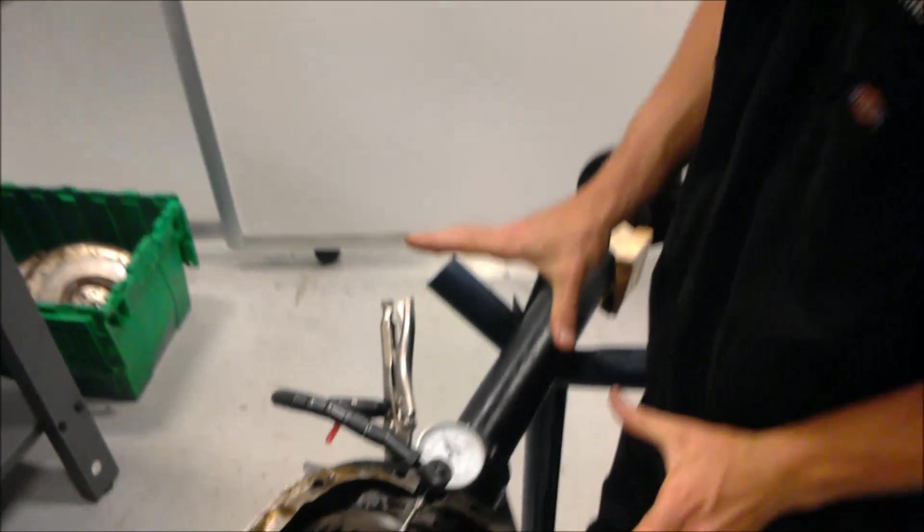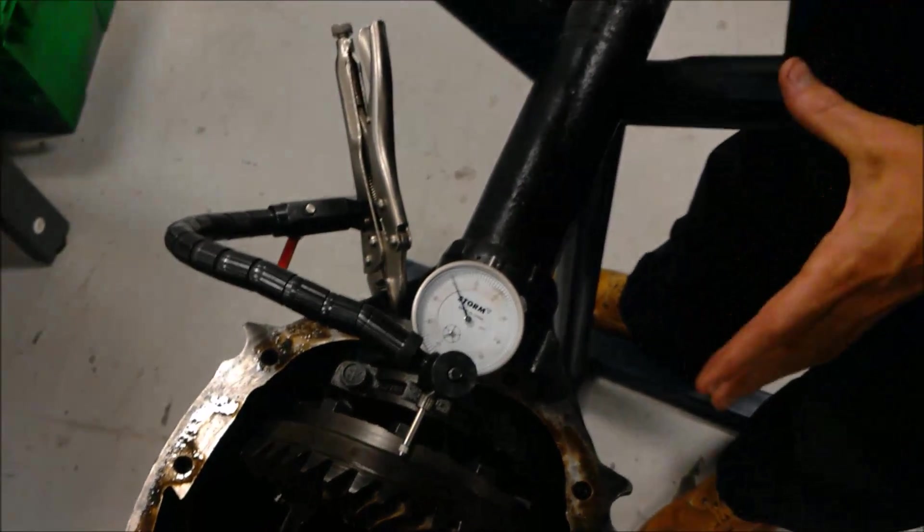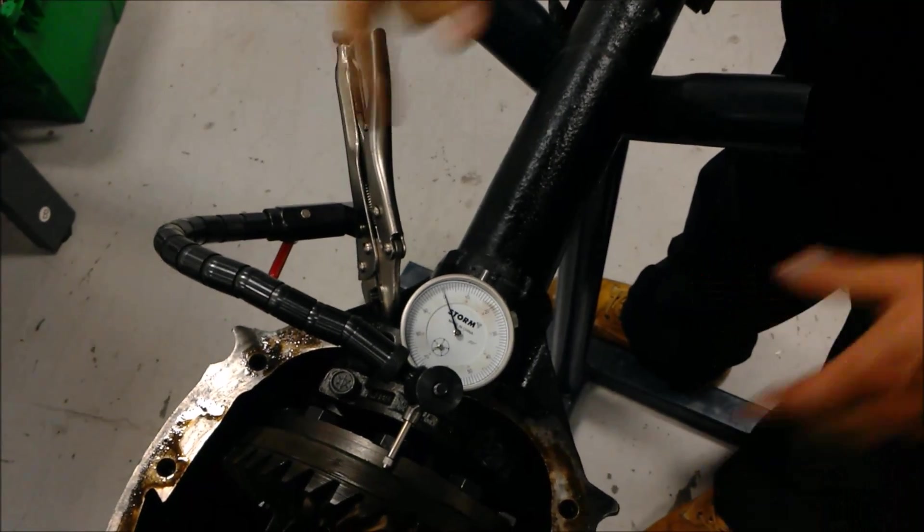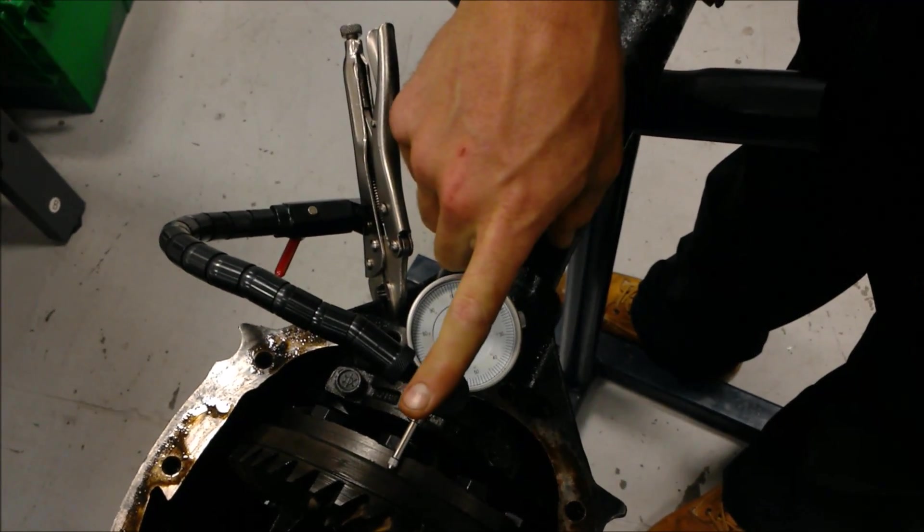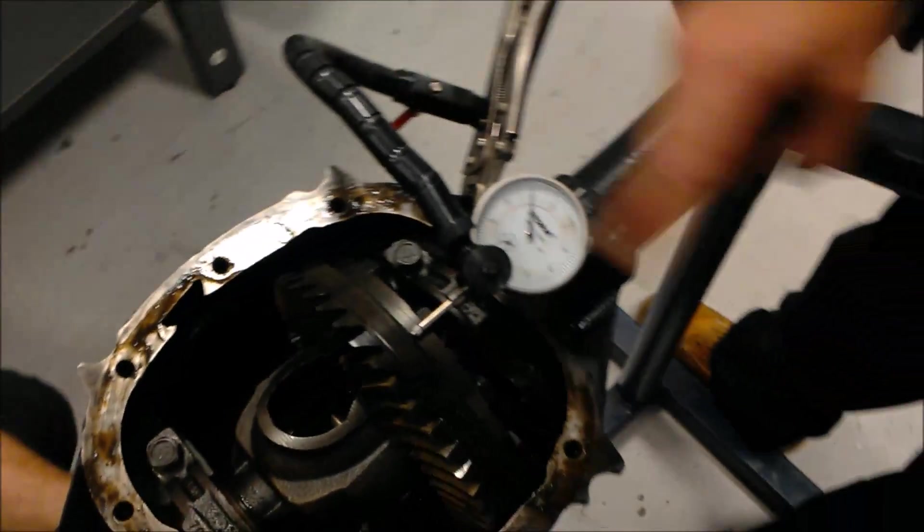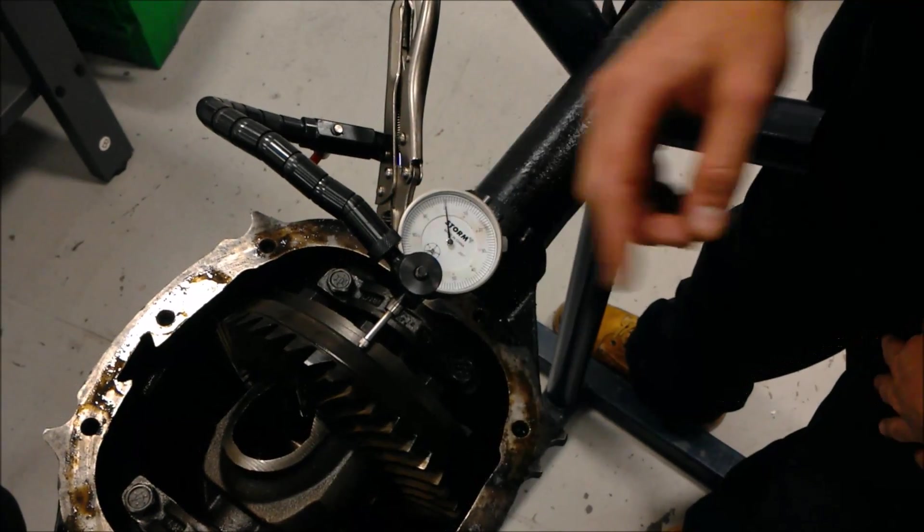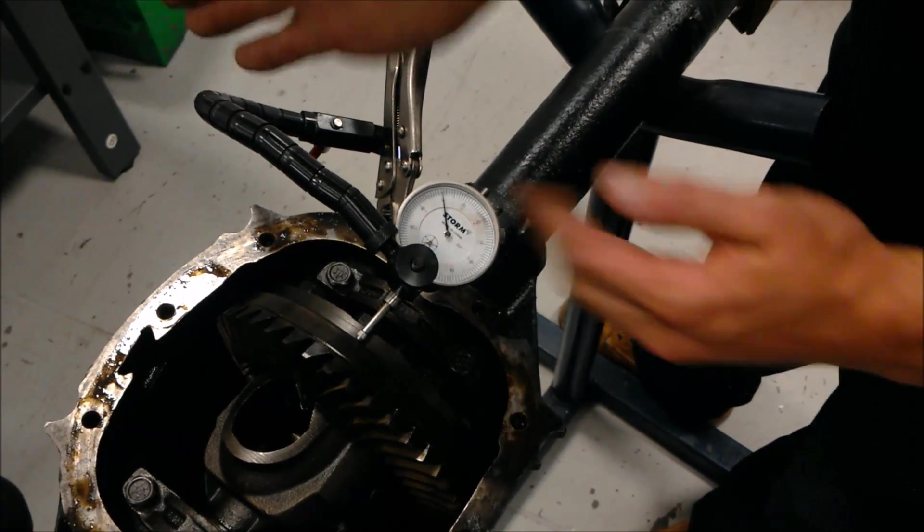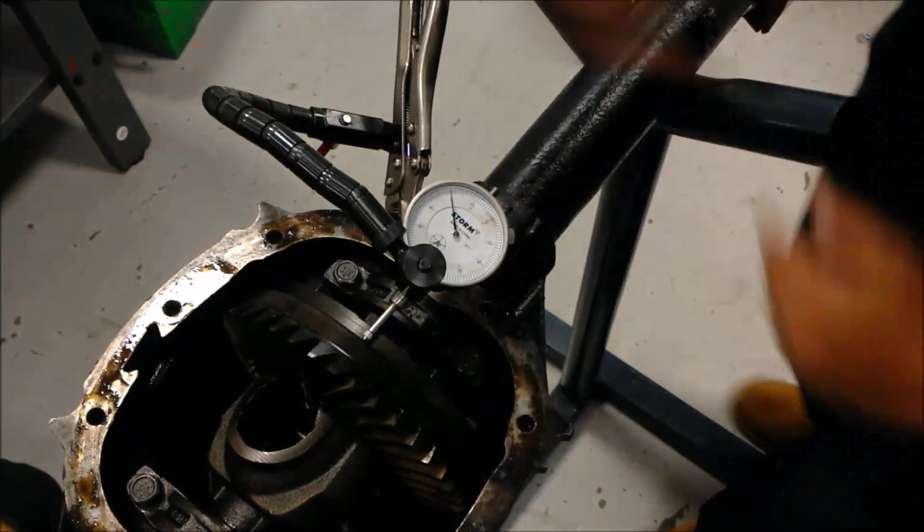If you look over here, we've got our rear end here, we've got our dial indicator clamped to the housing, and the dial indicator has the plunge setting on the back face of the ring gear. As we spin the ring gear, the plunge is going to move in and out, and we're going to measure how many thousandths of an inch run out the ring gear has, so pretty much seeing if it's warped or bent.